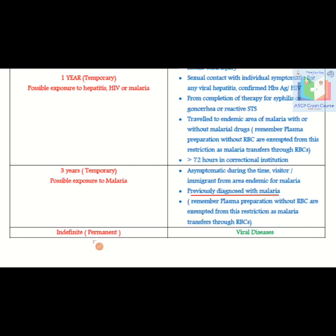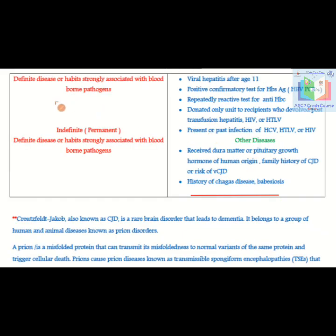Now we discuss indefinite or permanent rejections. Definite diseases or habits strongly associated with blood-borne pathogens include: viral hepatitis after age 11, positive confirmatory test for hepatitis B surface antigen, positive hepatitis B virus PCR test, repeatedly reactive test for anti-HBc, donation that led to a recipient developing post-transfusion hepatitis, HIV or human T-lymphotropic virus infections — present or past — and present or past infection with HCV, HTLV, or HIV.